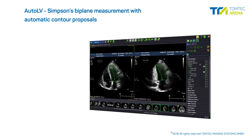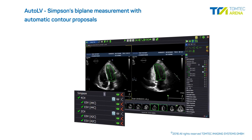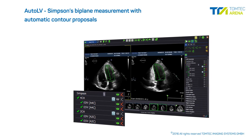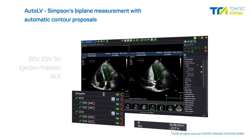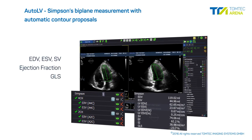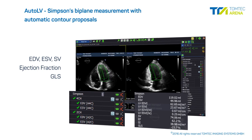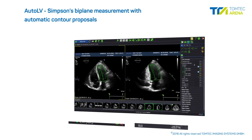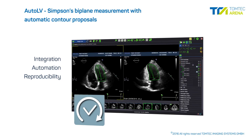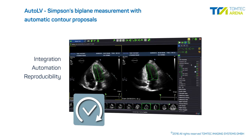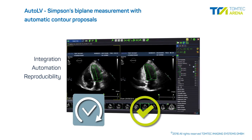The AutoLV module features an intuitive Simpsons biplane measurement with automatic contour proposals for volume, ejection fraction, and global longitudinal strain assessment. Seamless integration combined with automation allow for very rapid analyses and exceptional reproducibility.